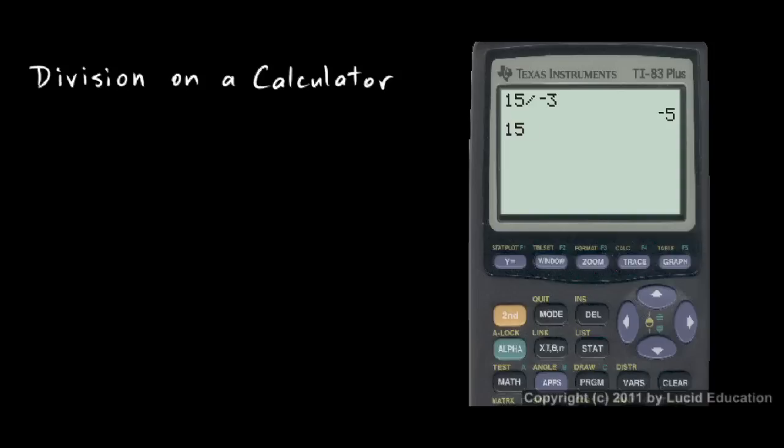If instead you type 15 divided by minus 3, that doesn't make sense. It's using a minus sign, and notice it looks a little bit different than the negative sign. The calculator doesn't know if you're trying to say 15 divided by or 15 minus.